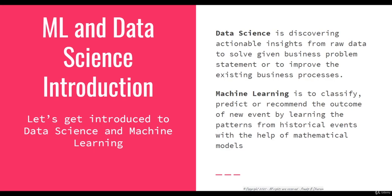In simple terms, data science is discovering actionable insights from raw data to solve a given business problem statement or to improve existing business processes. Machine learning is to classify, predict, or recommend the outcome of a new event by learning patterns from historical events with the help of mathematical models.